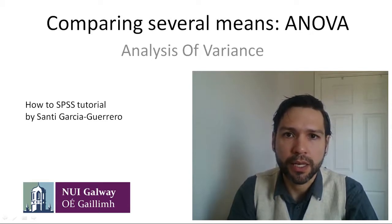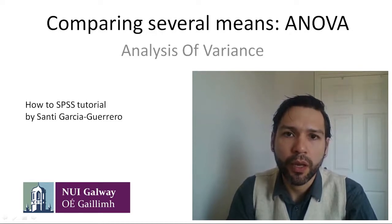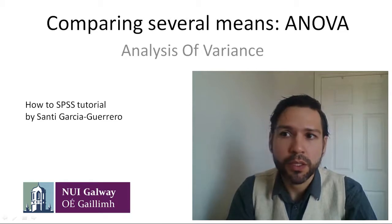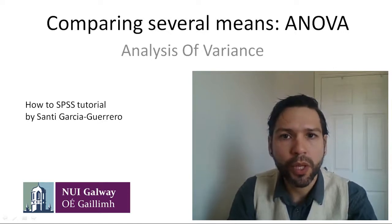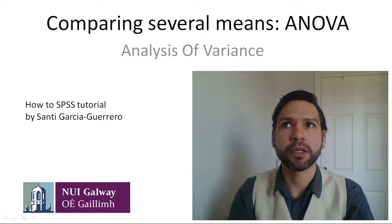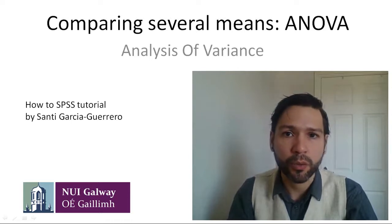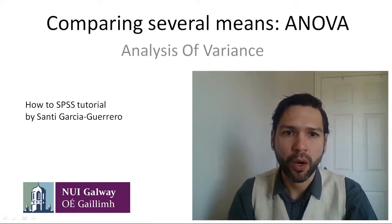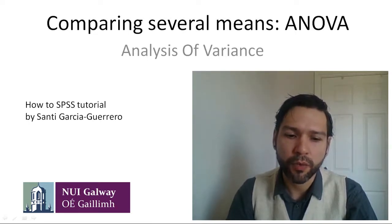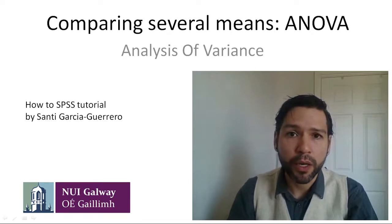We run ANOVA analysis when we want to compare mean differences between three or more groups. If you have only two groups, you could just do a t-test. Even though potentially we could do several t-tests between three or more groups, the reason we don't do that in research is because it would raise what is called the family-wise error — that is, the probability of committing a Type 1 error.